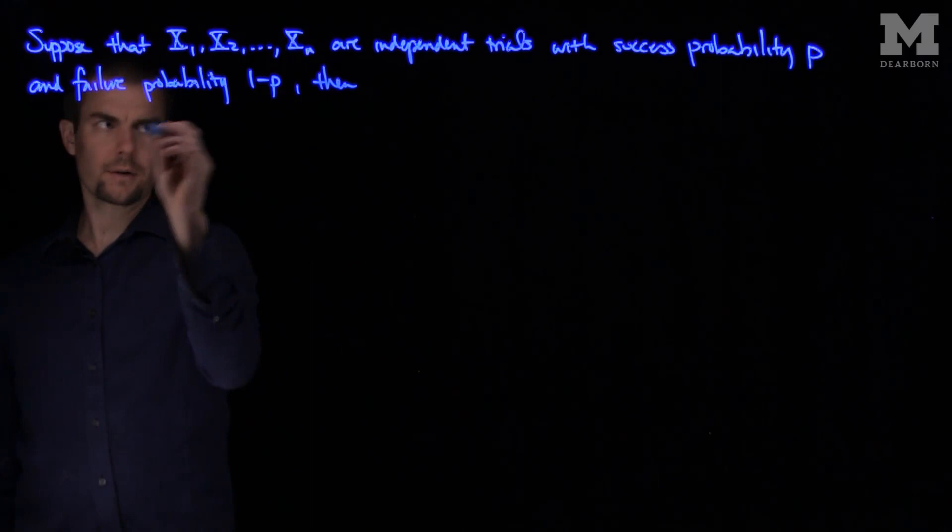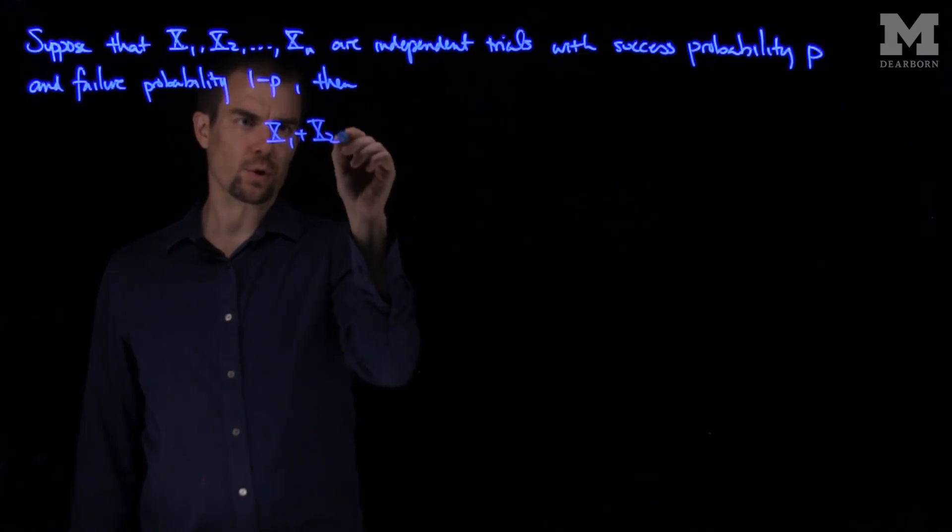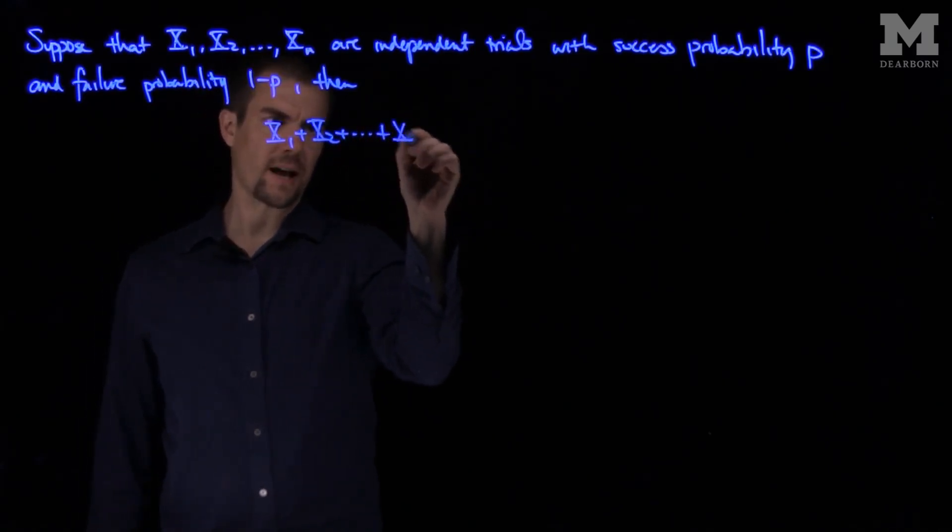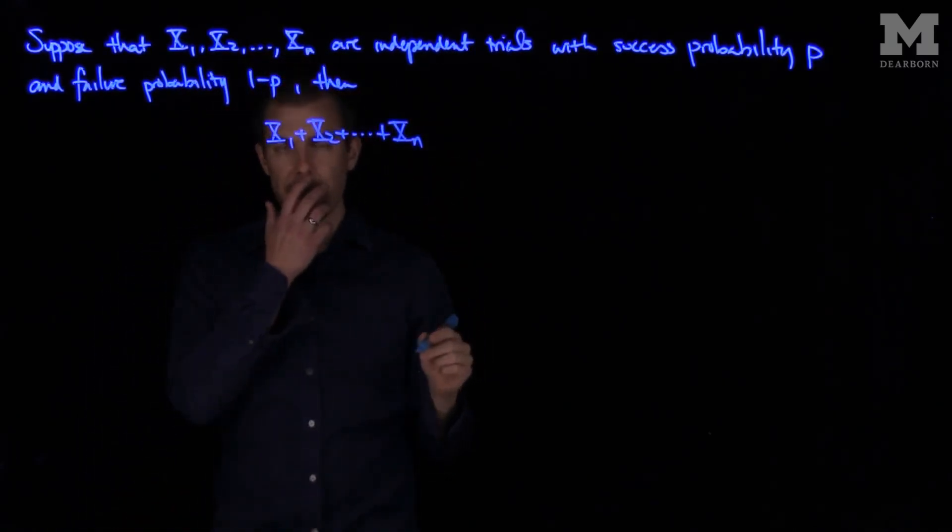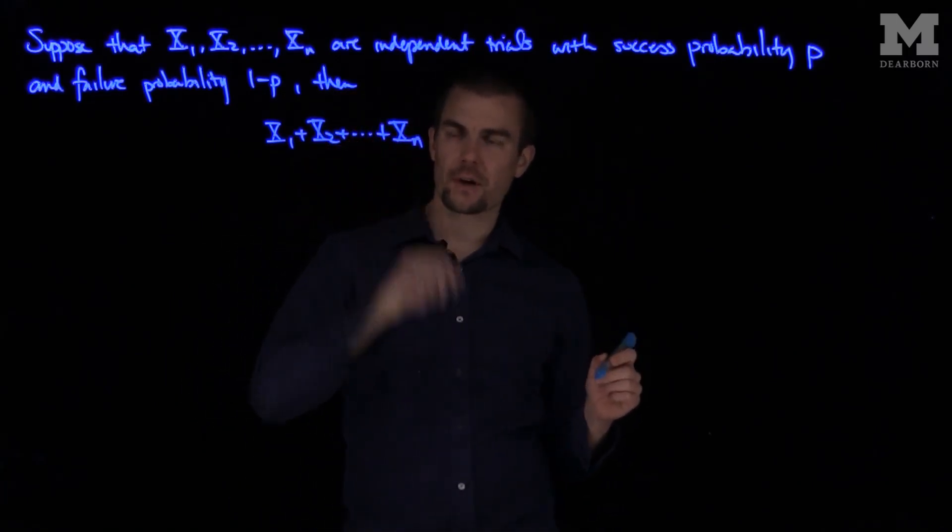If I look at x1 plus x2 plus xn, that is the sum, and this will tell me, this will output the number of successes, or the number of failures being zero.